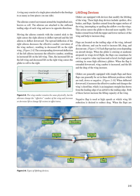Each flap type has a use depending on aircraft design. When the glider is cruising at moderate airspeeds in wings-level flight, the flaps can sometimes be set to a negative value — up from trail or level — for high-speed cruising in some high-efficiency gliders. When the flap is extended downward, wing camber is increased, and the lift and drag of the wing increase. Gliders are generally equipped with simple flaps that can be set in three different positions: trail, down, or negative. When deflected downward, it increases the effective camber and changes the wing's chord line, which is an imaginary straight line drawn from the leading edge of an airfoil to the trailing edge. Both of these factors increase the lifting capacity of the wing. Negative flap is used at high speeds at which wing lift reduction is desired to reduce drag.